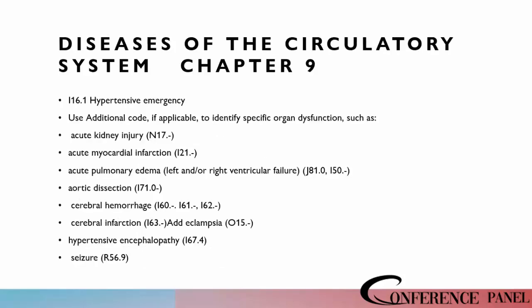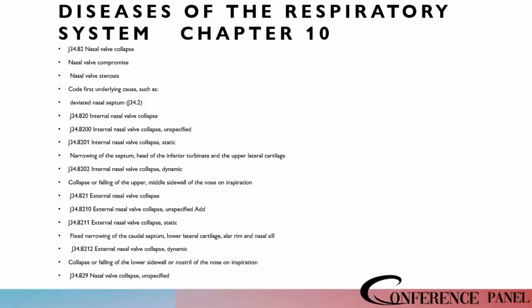There wasn't anything in particular in chapters seven and eight, but in chapter nine we do have some new codes related to diseases of the circulatory system. We have I16.1 for hypotensive emergency. Moving on to chapter ten in respiratory, we've got a good many new codes to look at there.